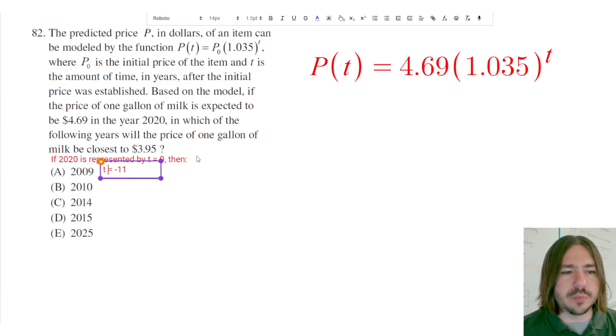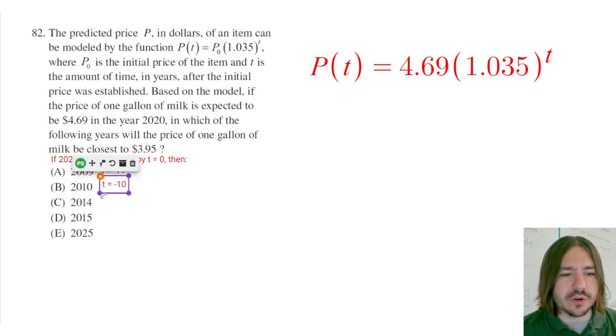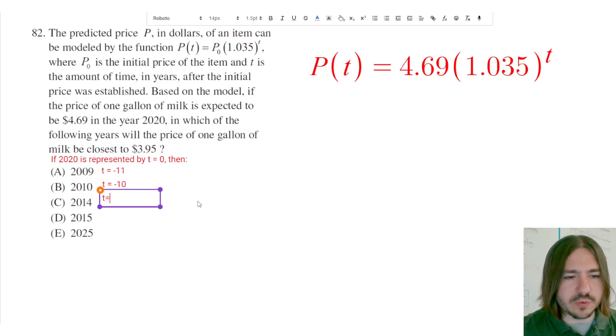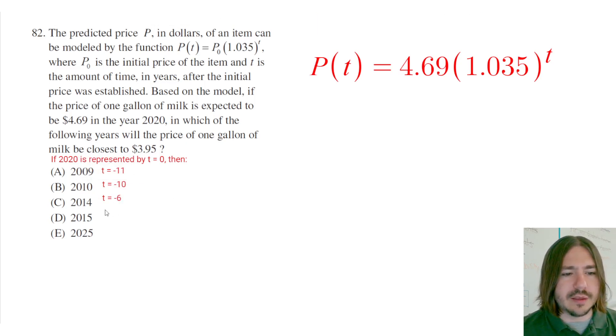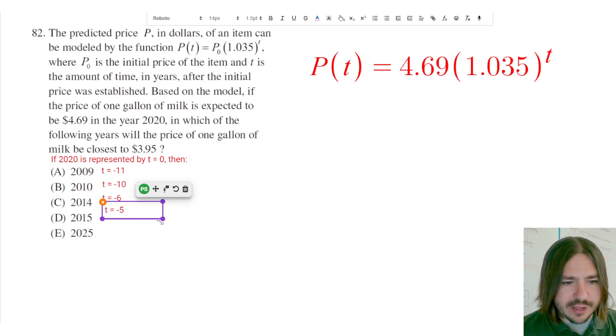That would mean also that 2010 would be t equals negative 10, because 2010 is 10 years before 2020. 2014 would be 6 years before 2020, so the t value there would be negative 6. 2015 is going to be t equals negative 5.